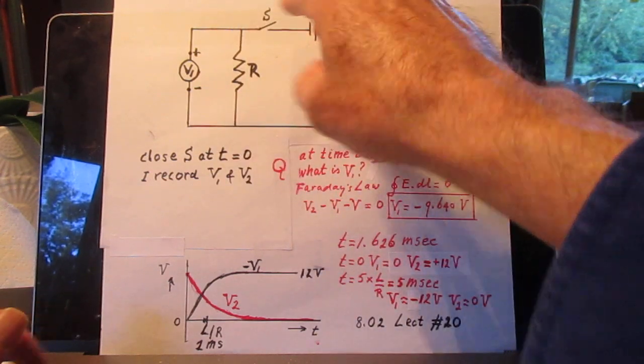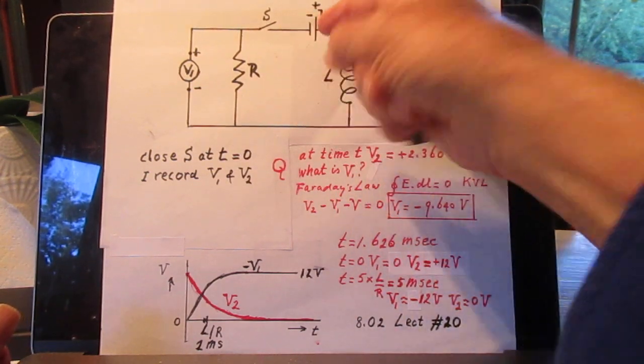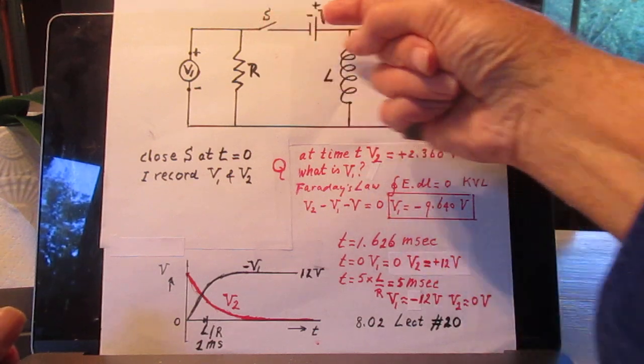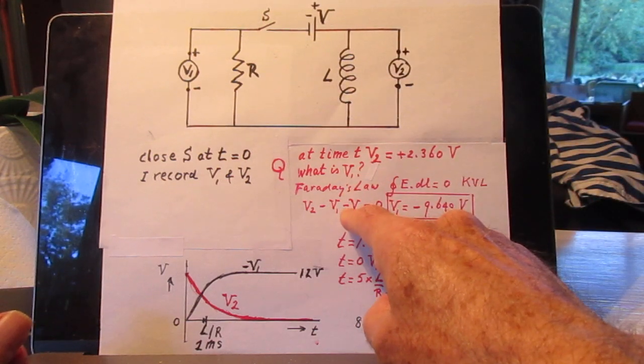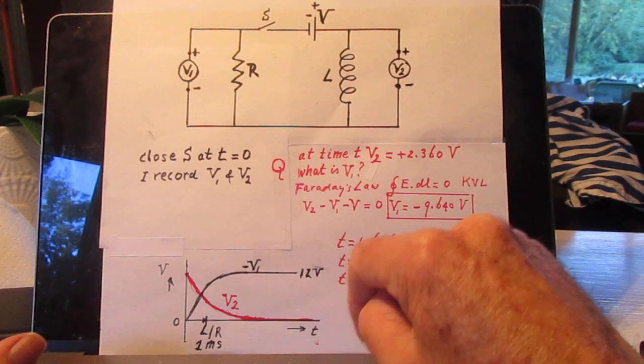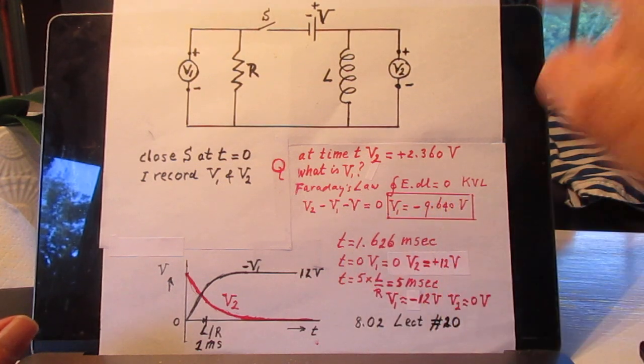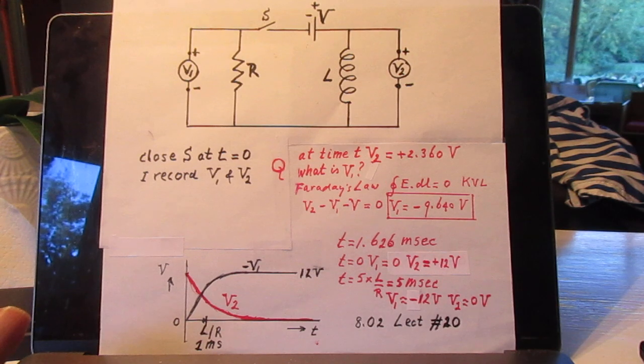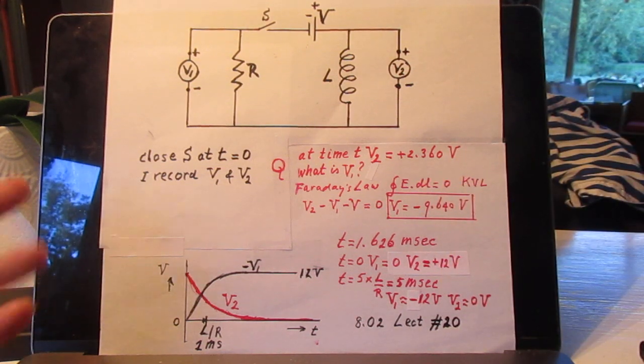When I reach the battery, I go through the battery, the E field in the battery is in this direction, so that it is minus V equals 0. So V1 is minus 9.640 volts. More than 50% of the answers claim that it is plus 9.640 volts. That's wrong.